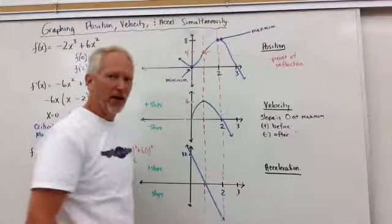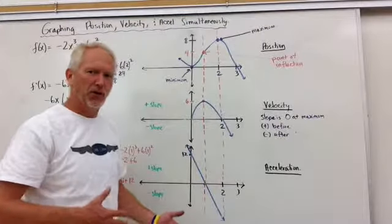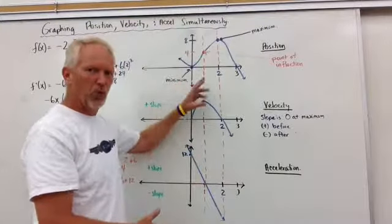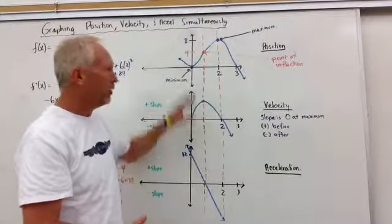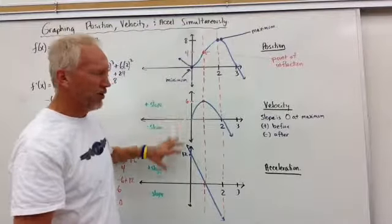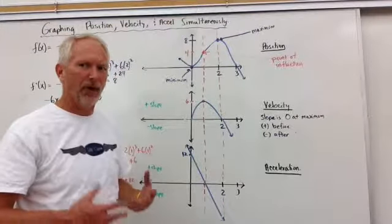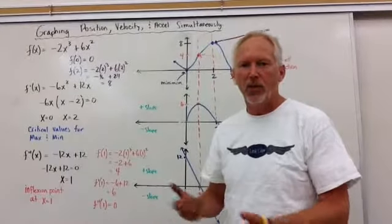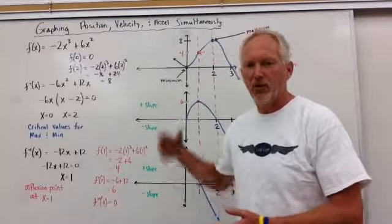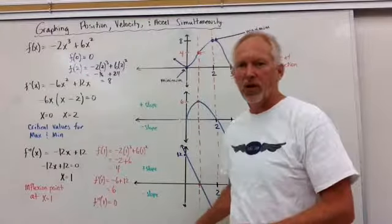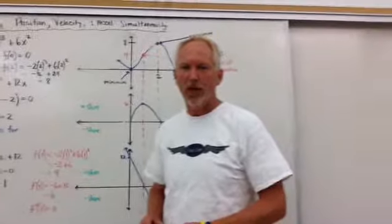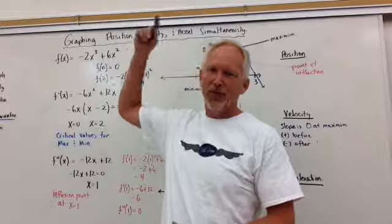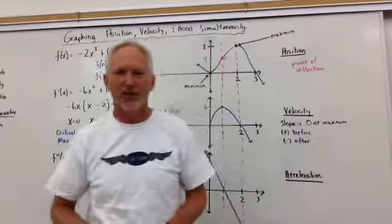Anyway, I know that's a lot, but what you've got to do is go back through this video, re-review it, draw the lines out, and really think about what is happening with the position graph, the velocity graph, and the acceleration graph, and how they tie together to actually create quite a harmonious bit of mathematics between the three functions and how you can view them and their relationship. Anyway, thanks again. That is graphing position, velocity, acceleration simultaneously. Have a great night. We'll talk to you soon.